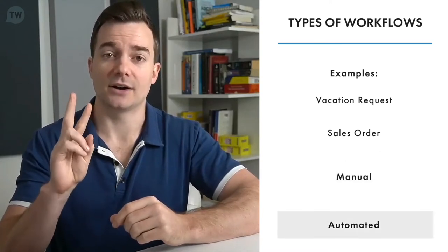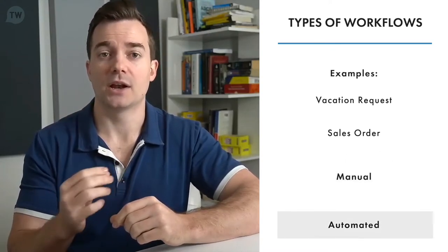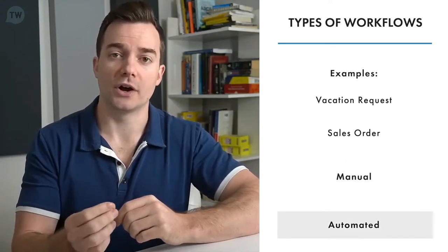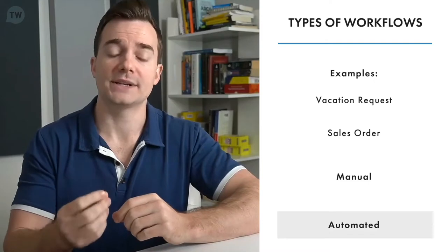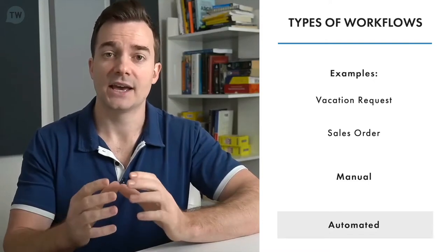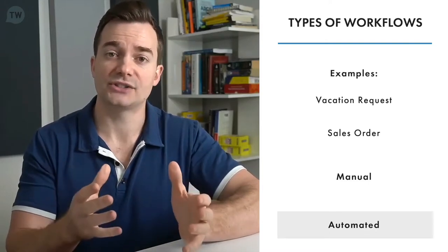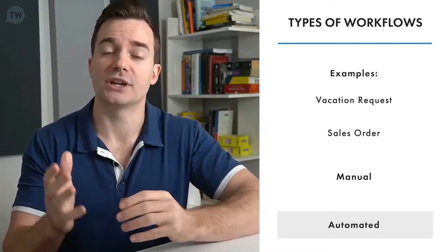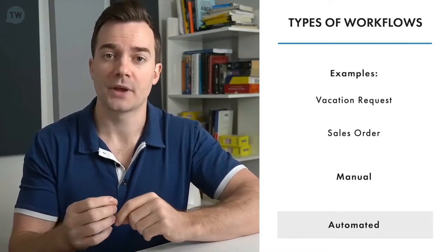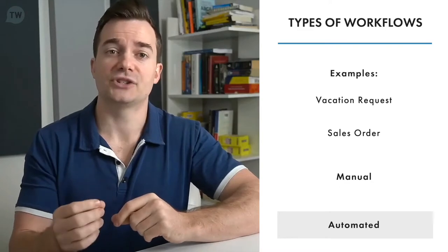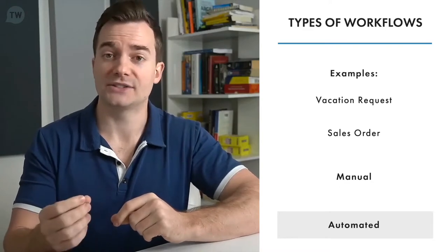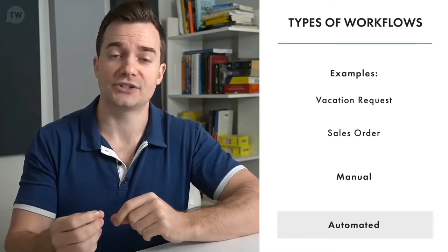The second type is automated. In an automated workflow, when a human completes a task, a computerized system assigns the next task to the appropriate person in the workflow. The system manages the flow of tasks, including notifications, deadlines, and reminders.